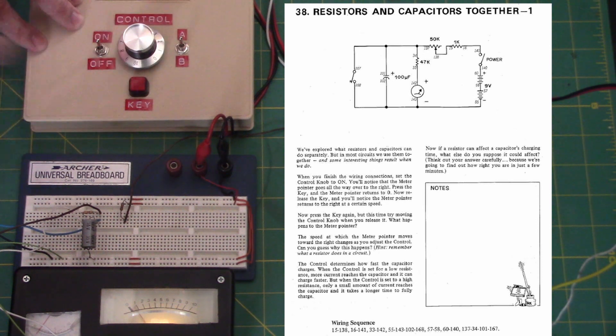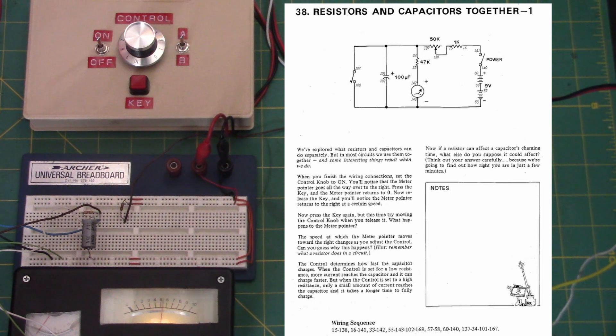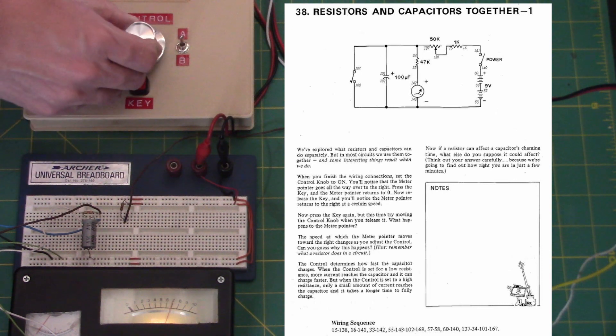What happens to the meter pointer? The speed at which the meter pointer moves toward the right changes as you adjust the control. Can you guess why this happens?